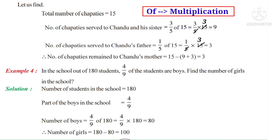Example 4: In a school, out of 180 students, 4/9 of the students are boys. Find the number of girls. Solution: Number of students = 180. Part of boys = 4/9. Number of boys = 4/9 of 180 = 4/9 × 180. On simplification by 9, that is 4 × 20 = 80 boys. Number of girls = 180 − 80 = 100 girls.